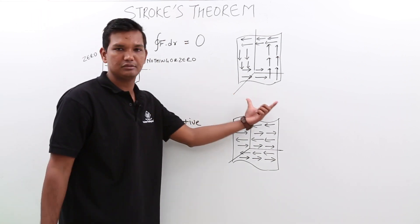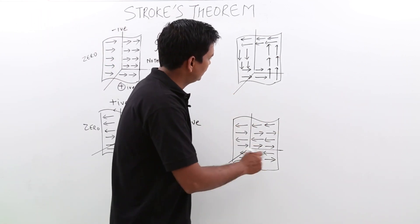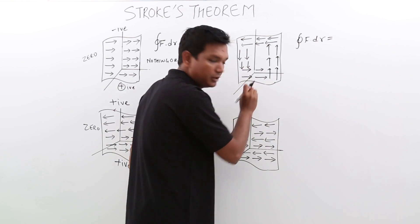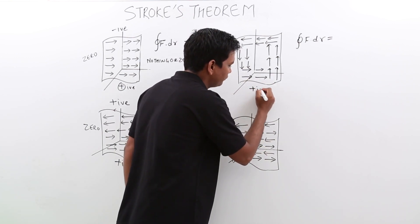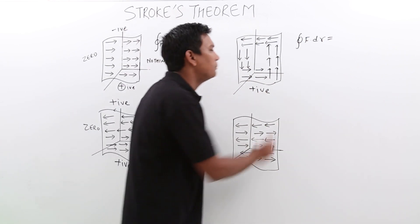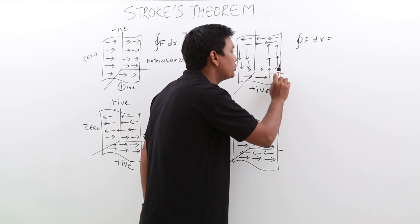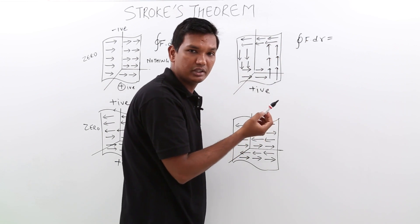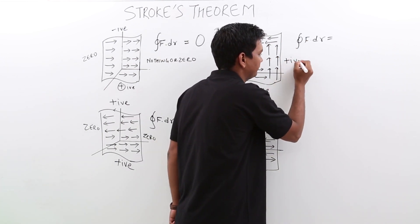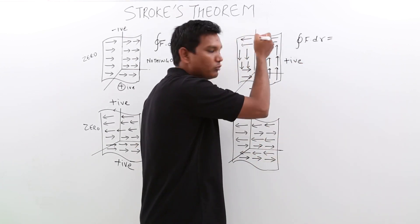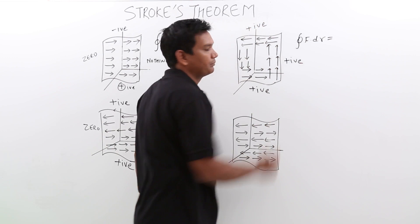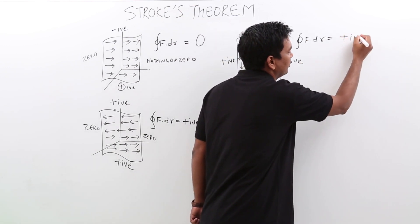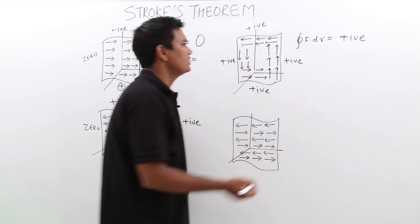Let's try to calculate for figure 3. Again I have to calculate f dot dr. If I calculate on the bottom side, it would be a positive quantity, same as previous. But if I go to the sides, now it is not going radially outward, it is going upward — it is along the line. So, the angle would be 0 degrees, cos 0 is 1, so it comes out to be some positive quantity. Along all sides it is a positive quantity. So, f dot dr over the line integral would be some positive quantity.